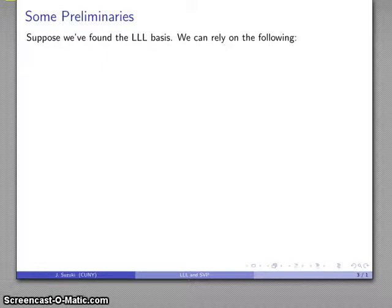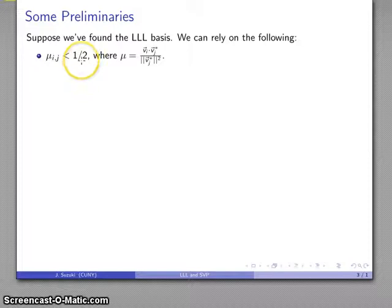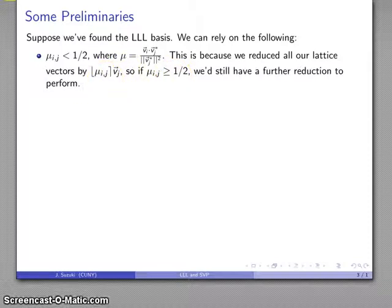Let's take a look at some preliminaries. Suppose we've actually found the LLL basis. We can rely on the following. First, mu_ij has to be strictly less than one half. Remember, mu is V_i dot V_j* over ||V_j*||^2. The star vectors are the Gram-Schmidt basis vectors; the unstarred vectors are the lattice basis vectors. We know this dot product over the norms is going to be less than one half, because we've reduced all of our lattice vectors by the rounded value of mu_i,j.